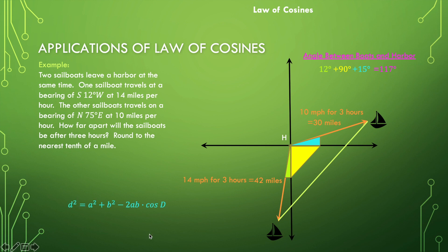We can set up our law of cosines. Since we're solving for d, d squared will equal a squared plus b squared minus 2ab times the cosine of d. So we can go ahead and substitute 42 in for a, 30 in for b, and those go there as well. And then d will be that angle measure of 117 degrees.